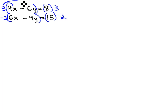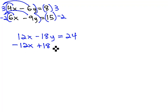When distributing, the first equation is now 12x minus 18y equals 24. Distributing the negative 2 through, we end up with negative 12x plus 18y equals negative 30.